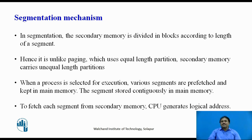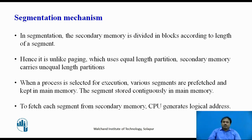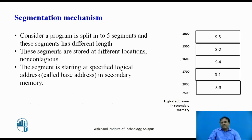When we bring a segment into main memory for processing, we must ensure there is continuous memory allocation for that segment. If we don't find enough memory in main memory to accommodate the segment, it is not possible to transfer it from secondary memory. For example, a process divided into five segments S1 to S5 is stored on the hard disk: S5 starts at address 1000, S2 at 1300, S4 at 1600, and so on.